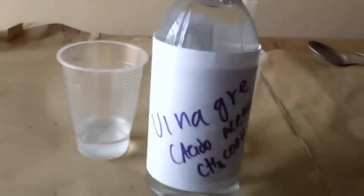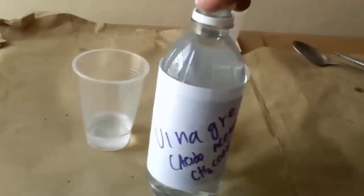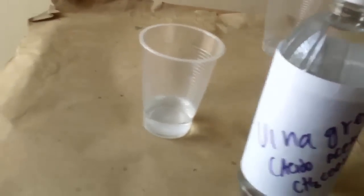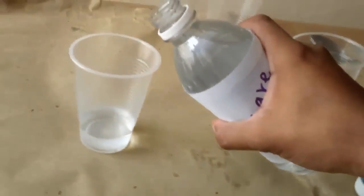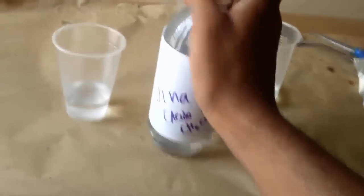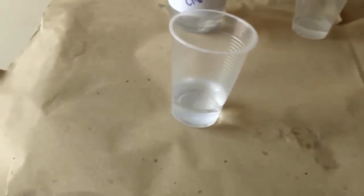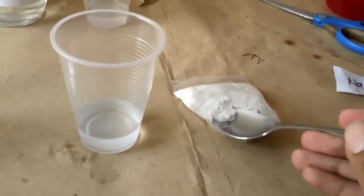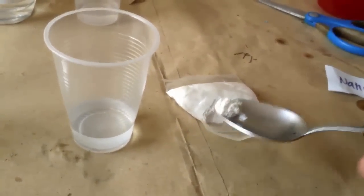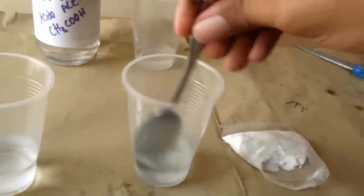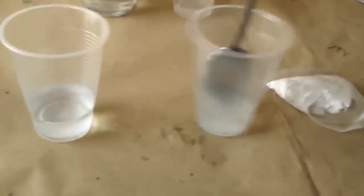En el vaso de la izquierda vamos a proceder a añadir un poco de vinagre. Y en el recipiente de la derecha procedemos a añadir el bicarbonato de soda. Y revolvemos bien, hasta que se disuelva por completo.